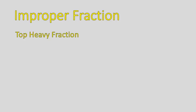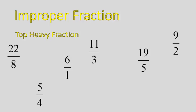Improper fractions, however, are something I call top heavy fractions, and that's when you have a larger number in the numerator than you have in the denominator. 11 over 3, 19 over 5. These are numbers where the numerator, or the top, is larger than the denominator, or the bottom number.